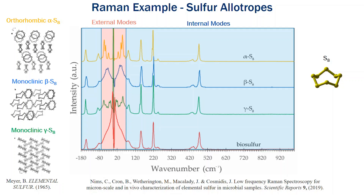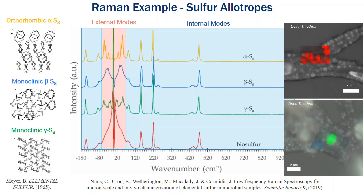Using the Raman spectra, in particular the low frequency region, one can actually scan a sample to identify what allotrope is present. What I have shown here is a Raman map that's been rendered and overlaid on top of an optical micrograph. We scan point by point — each of these pixels actually contains a full spectrum — and we compare that spectrum to references to identify what specimen is present within that defined region. This specimen is a thiothrix bacteria that actually encapsulates elemental sulfur from the environment into these little globules.